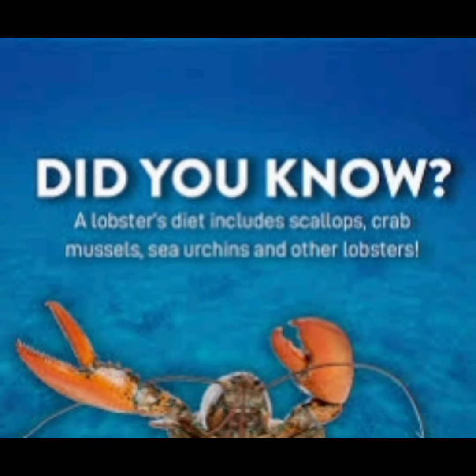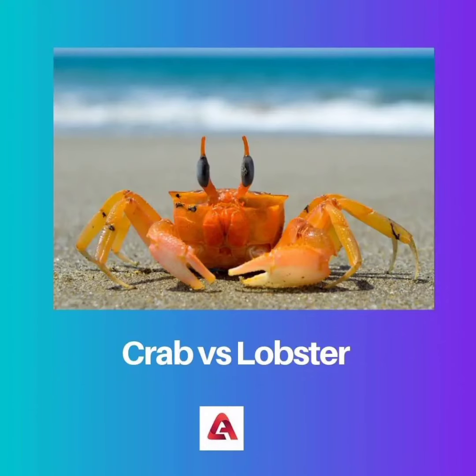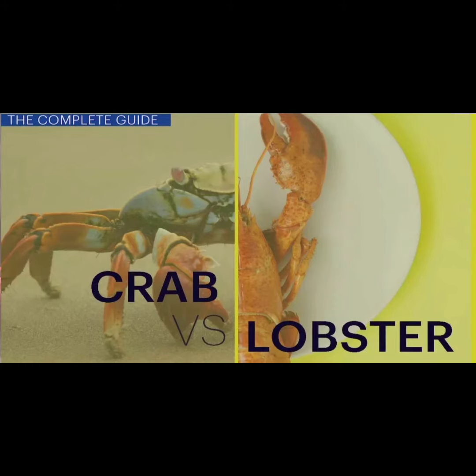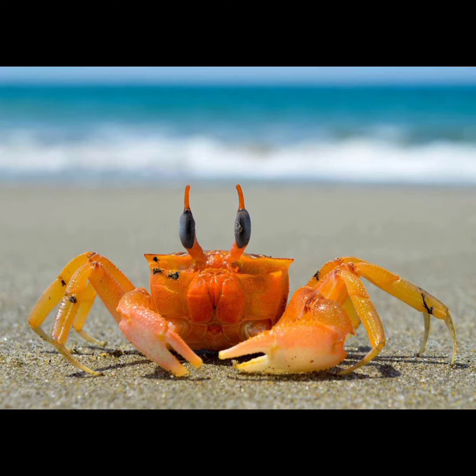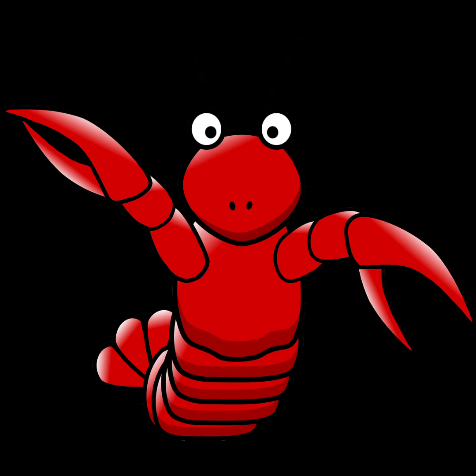Behavior. Crabs are more likely to be scavengers and opportunistic feeders, and some species are known to be more aggressive and territorial. Lobsters are generally more active hunters, preying on fish, molluscs, and other small marine creatures. They are also known for their migratory behavior.